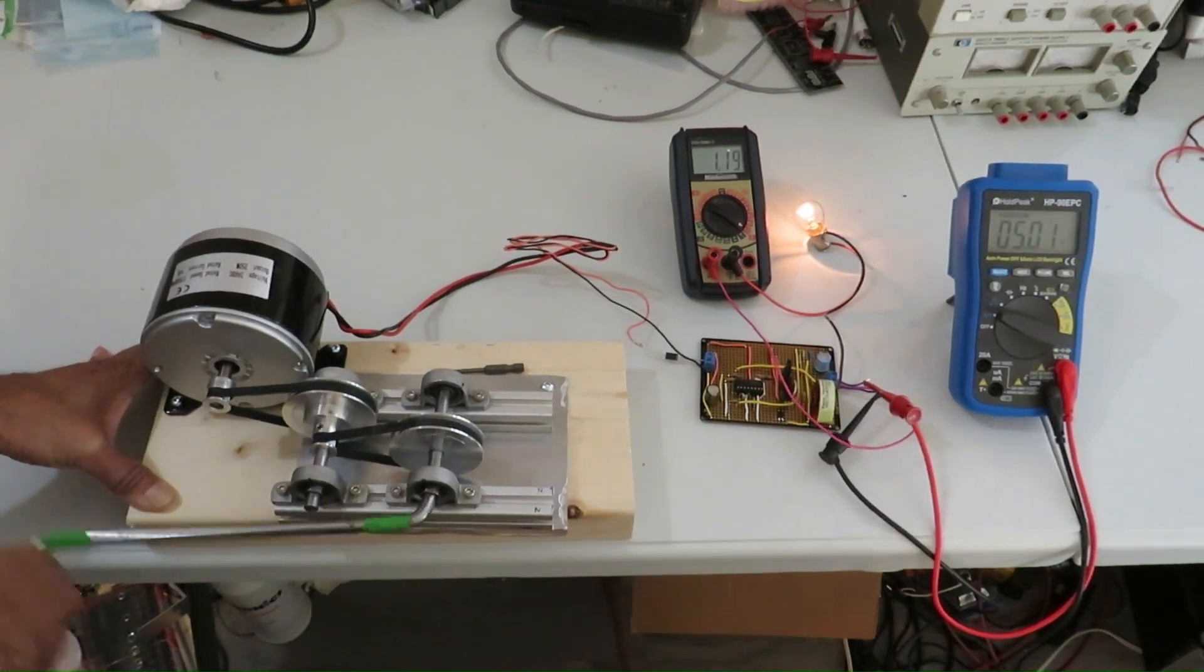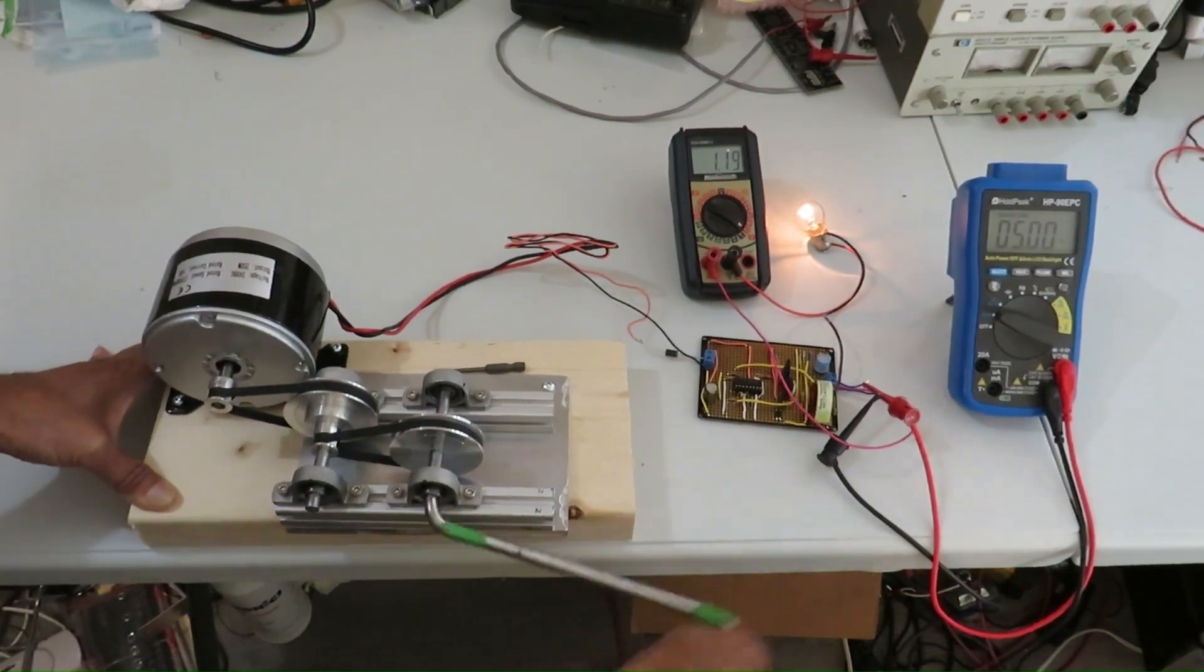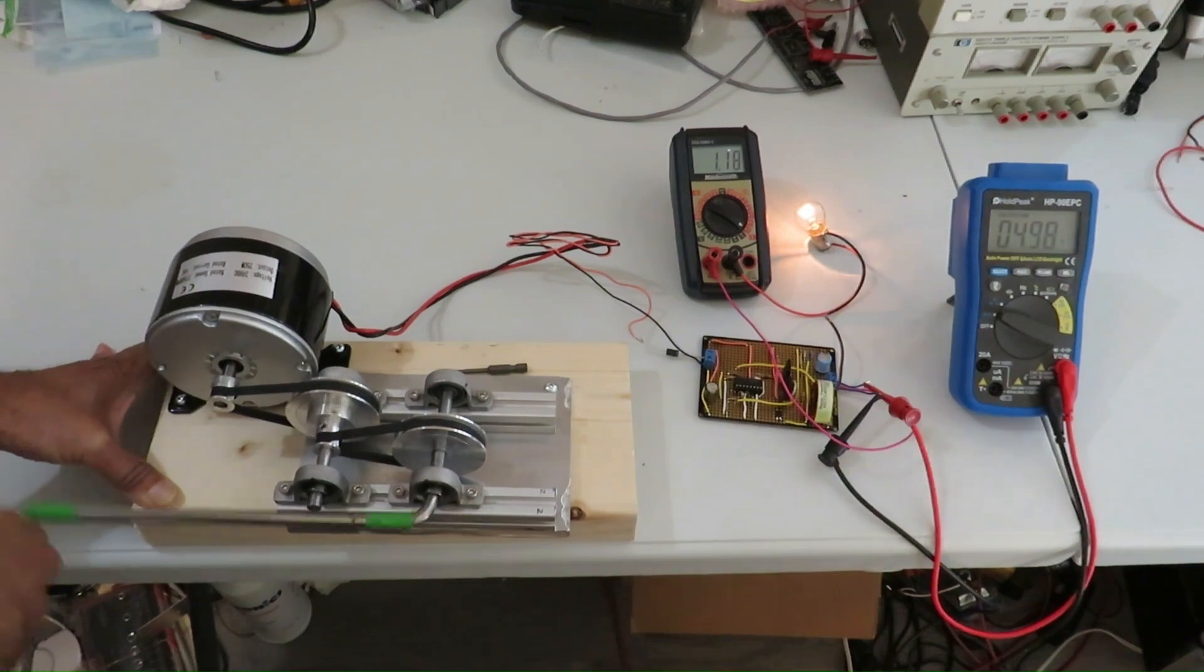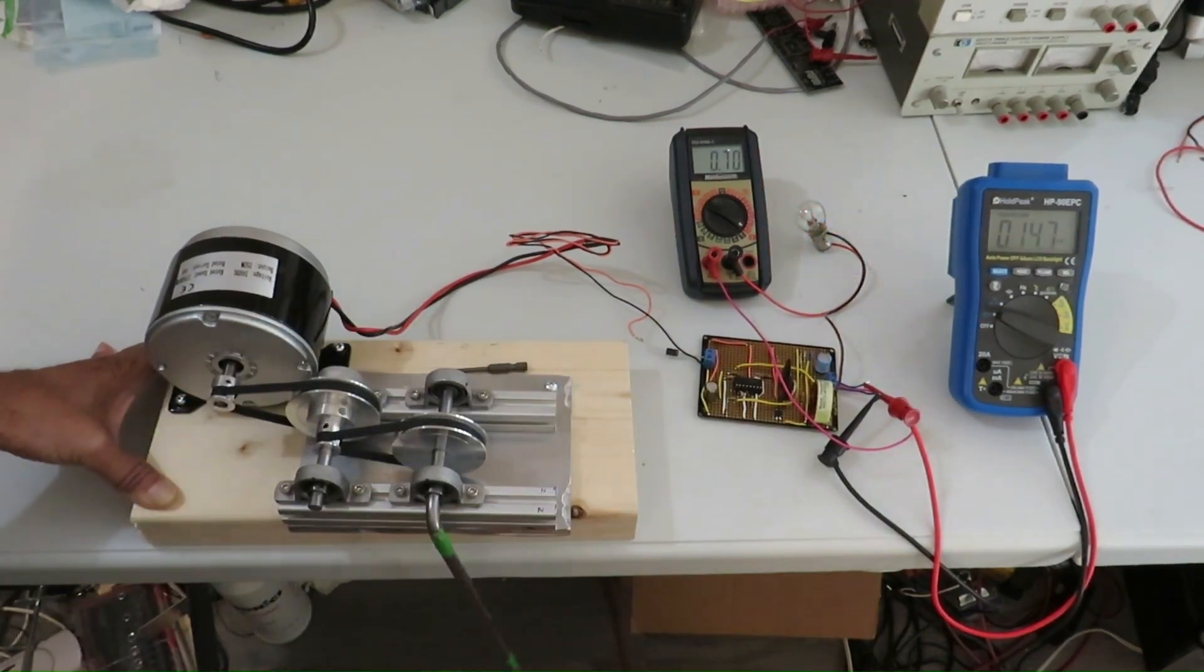It shows the voltage and current. You can see the voltage is nearly 5 volts and the current is 1.18 amps.